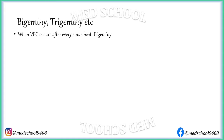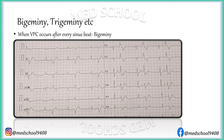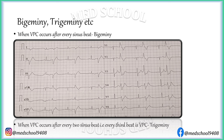When VPC occurs after every sinus beat, then it is called Bigeminy — meaning every alternate beat is a VPC, as in this ECG. When VPC occurs after every two sinus beats, that is every third beat is a VPC, then it is called Trigeminy.